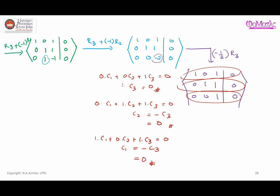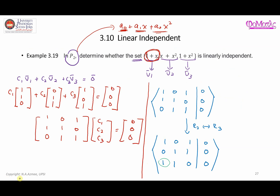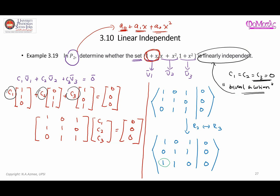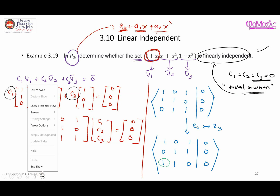Clearly, the values of c1, c2, and c3 are all zero. This means we get a trivial solution — the fancy name for having all answers equal to zero. Because of this result, we can conclude that the set of vectors is linearly independent. That's all for now; in the next video I'll continue with more practice on this concept of linear independence and dependence.